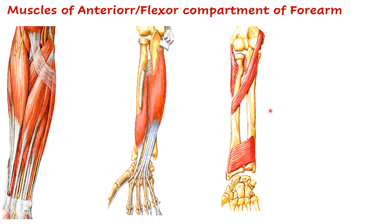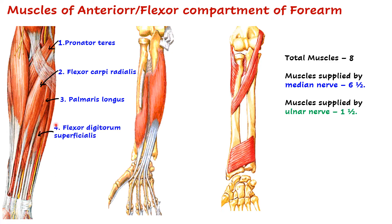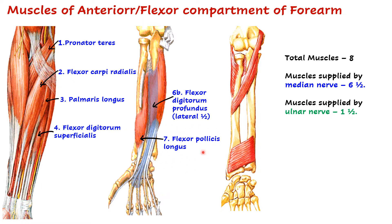In the flexor or anterior compartment of the forearm, we have eight muscles in total. Muscles supplied by median nerve are six and a half, and muscles supplied by ulnar nerve are one and a half — so the main nerve of the flexor compartment of the forearm is the median nerve. The six and a half muscles supplied by median nerve are: pronator teres, flexor carpi radialis, palmaris longus, flexor digitorum superficialis, the lateral half of flexor digitorum profundus, flexor pollicis longus, and pronator quadratus.